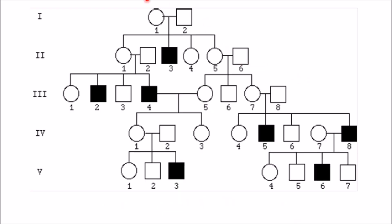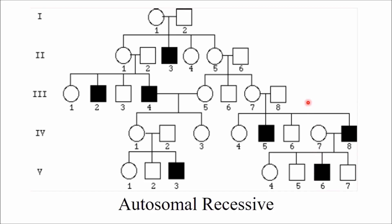In this particular chart, not all generations are affected — skipping is seen — so this is a recessive inheritance. We can also see male-to-male transmission. Therefore, all together, this is an autosomal recessive inheritance.